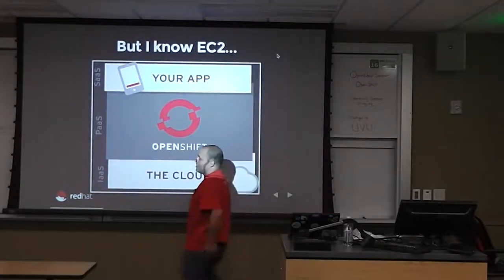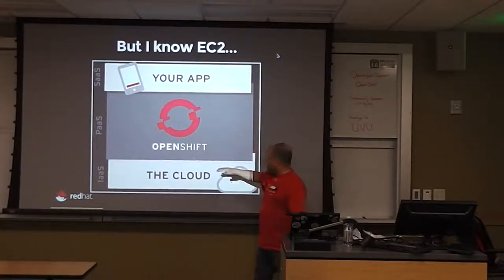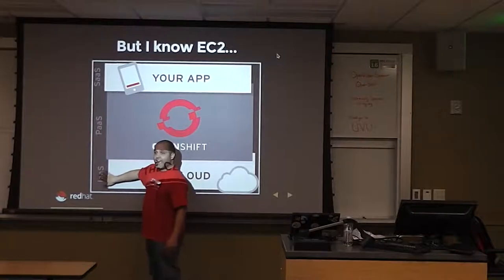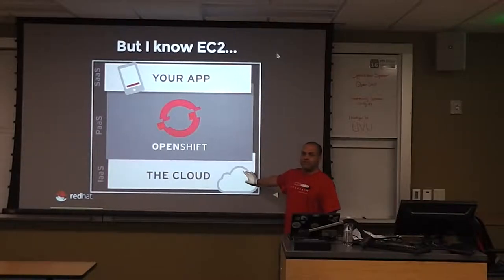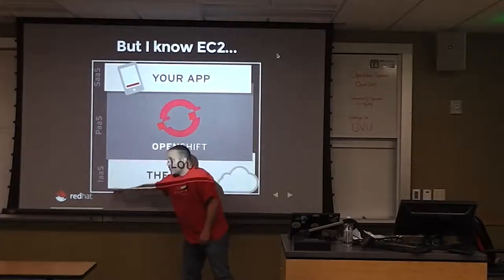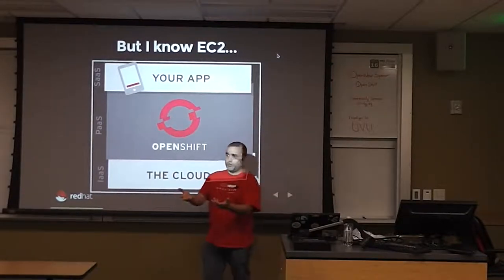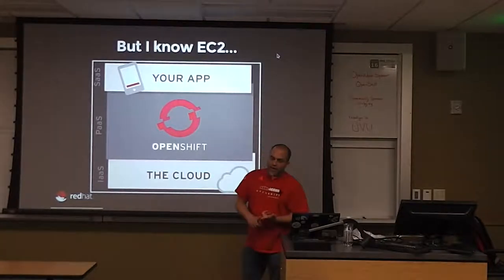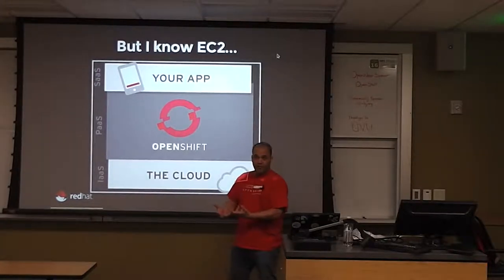Now, Platform as a Service. Let's do some party trivia. IaaS stands for Infrastructure as a Service — Amazon EC2 is the big example, along with Linode and Azure. You ask for a server: this much memory, this much CPU, this much disk space, and they give it to you. You're responsible for the OS, configuring it, DNS, and keeping it up to date.